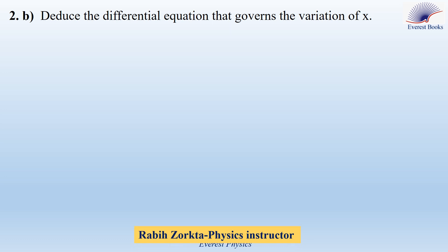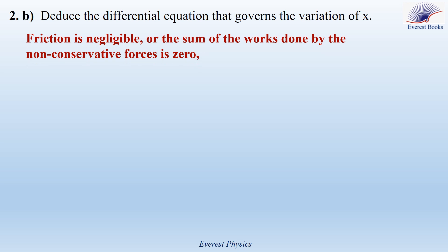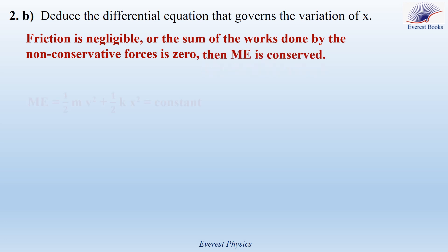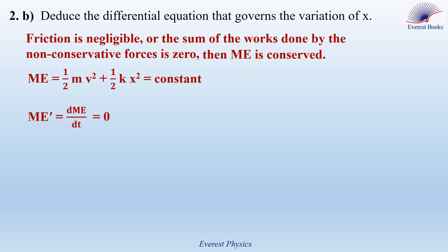Part 2B: Deduce the differential equation that governs the variation of x. Since friction is negligible, the sum of the works done by the non-conservative forces is 0, so the mechanical energy is conserved. The expression of mechanical energy — one half mv squared plus one half kx squared — is equal to a constant. Differentiating both sides, dME/dt equals 0.